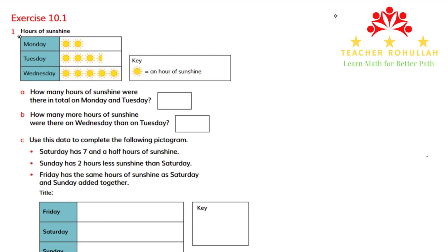The first question is showing hours of sunshine, and it is a pictogram. A pictogram is a type of graph that uses pictures to compare things or to compare data. The pictogram over here has a key. The key shows what each picture in the pictogram is showing. The key here is a sun which represents one hour of sunshine. So if there is one picture of the sun, there is one hour of sunshine.